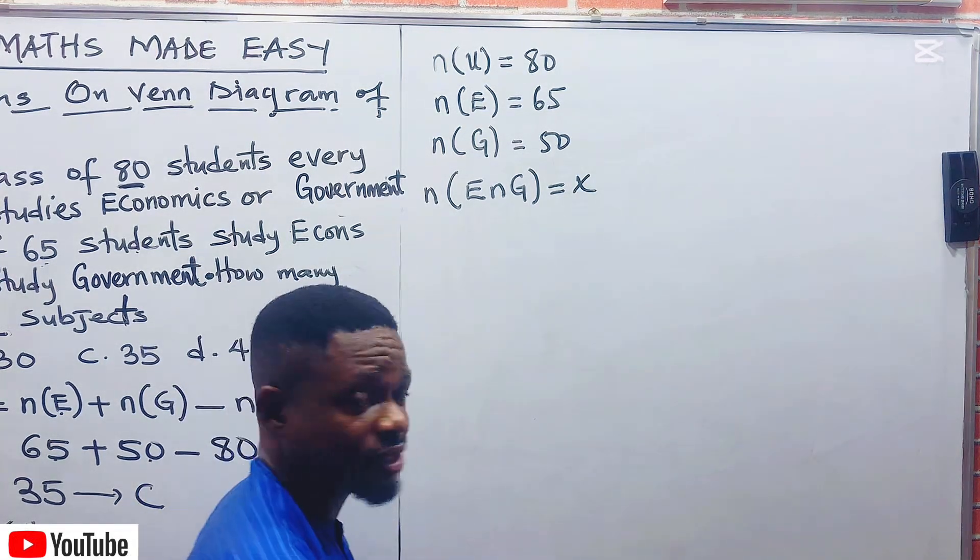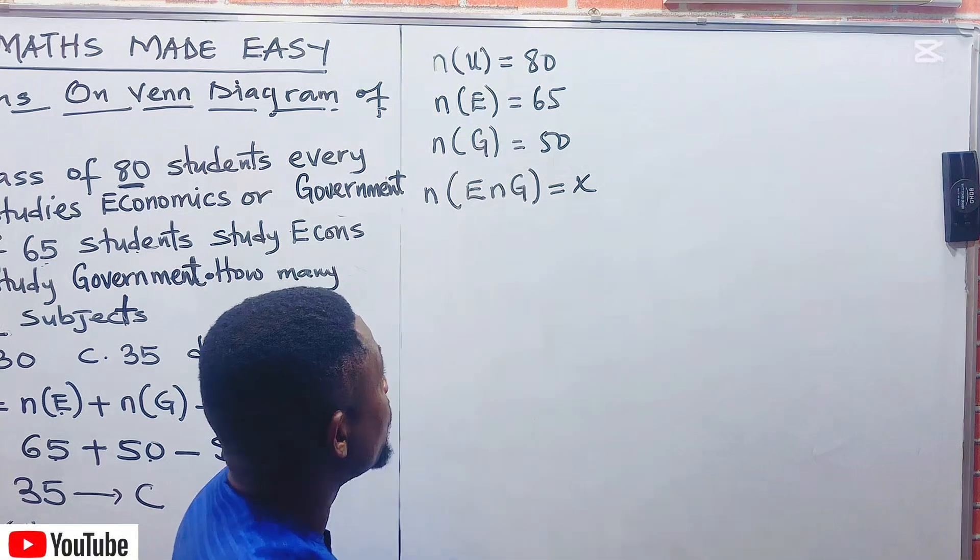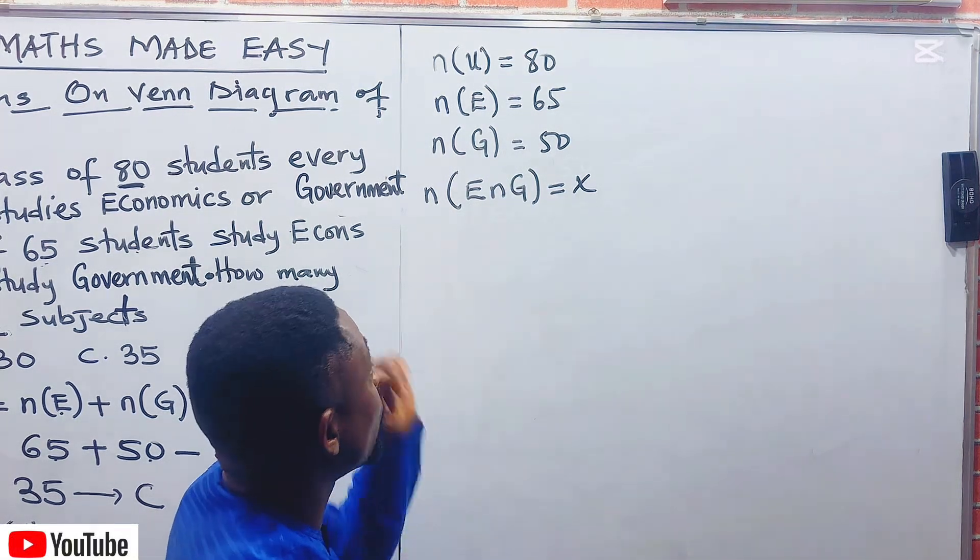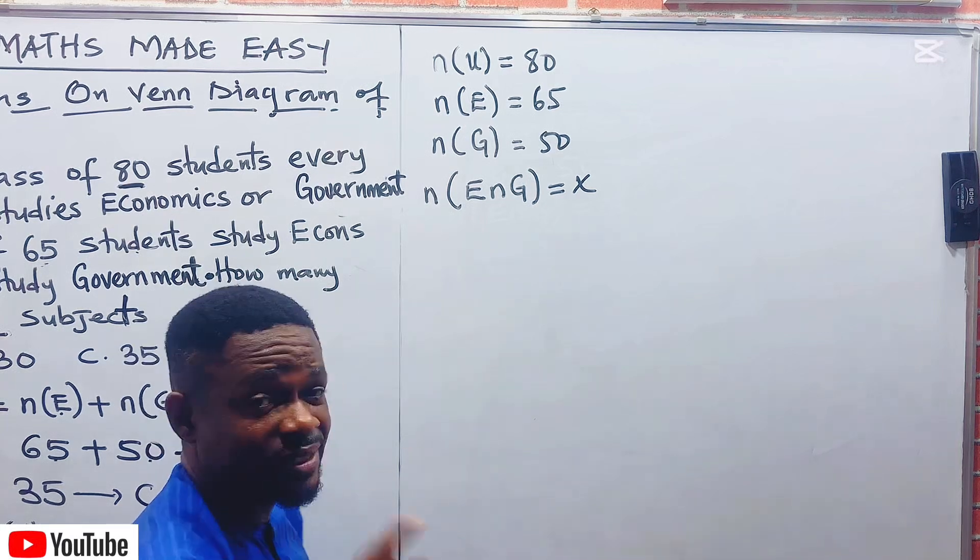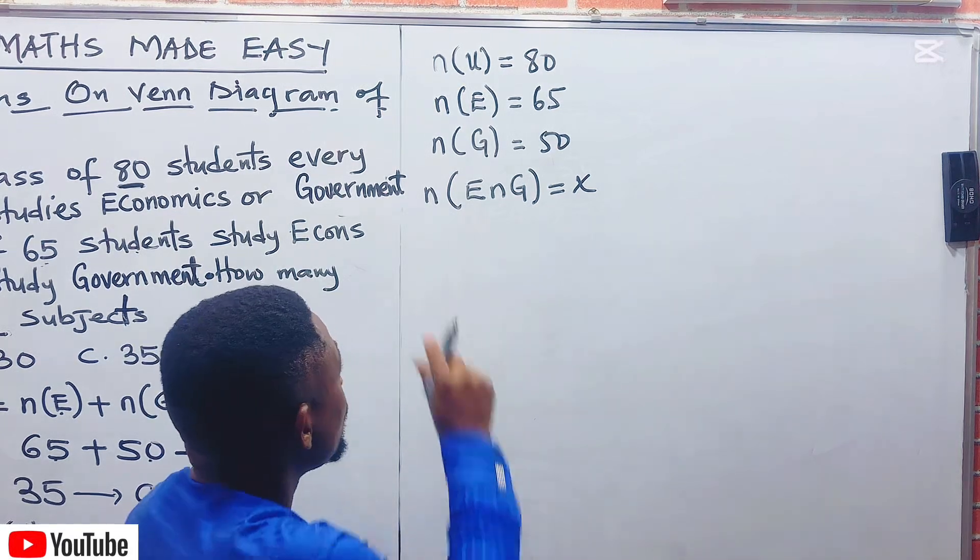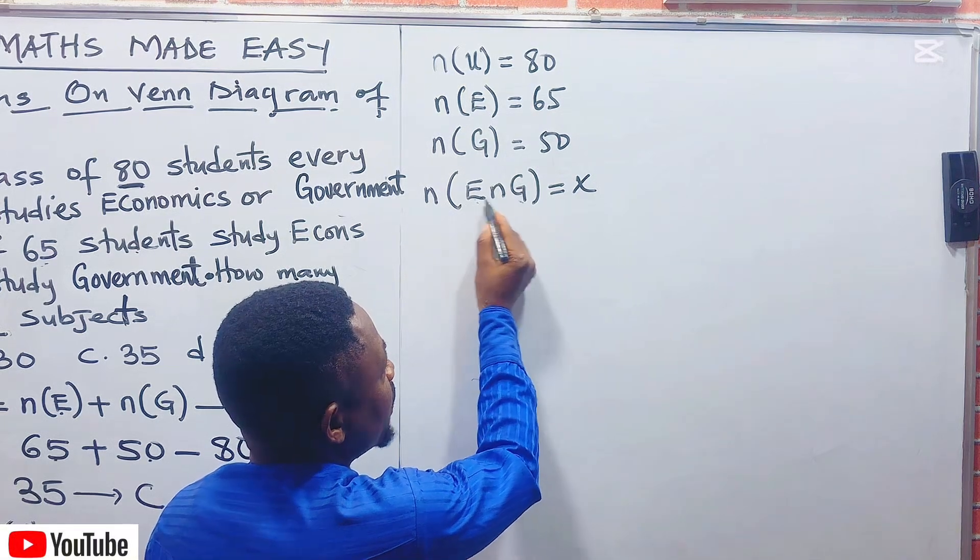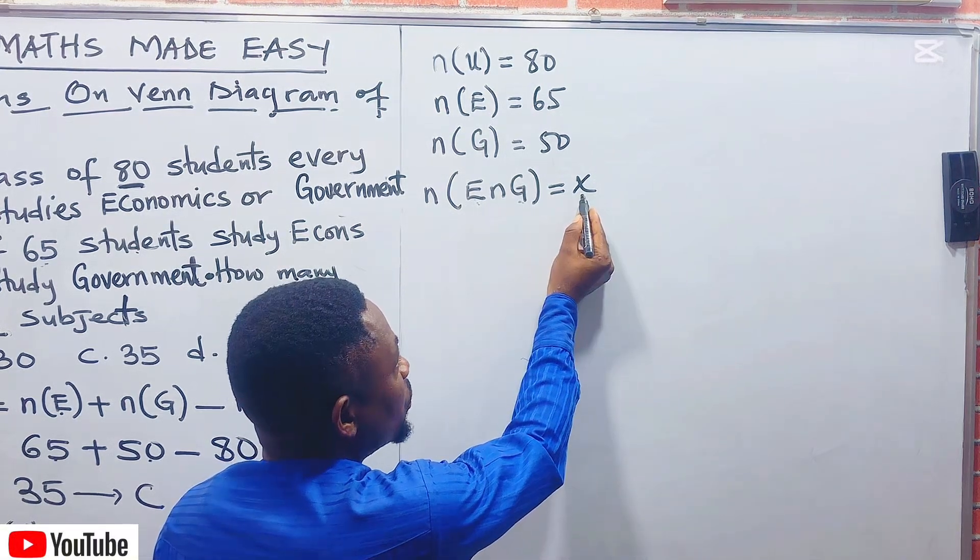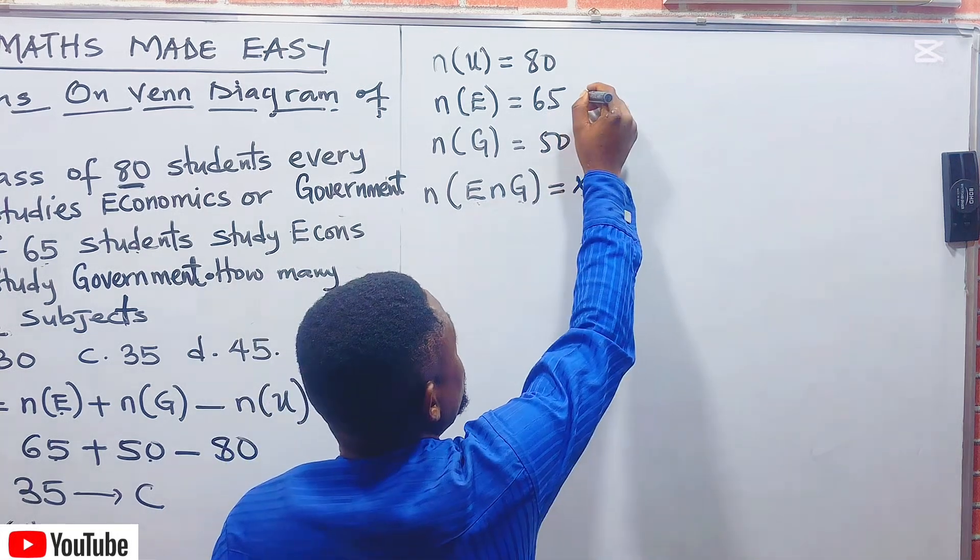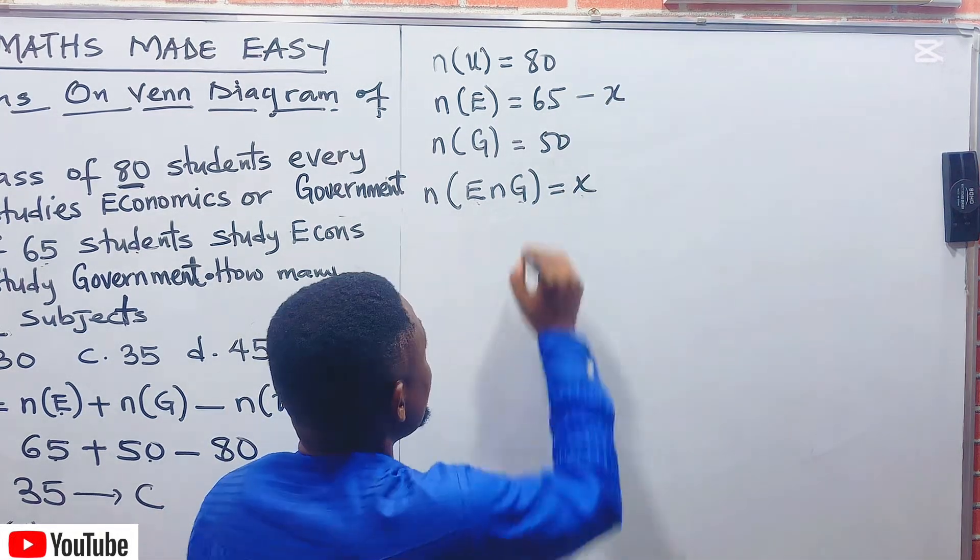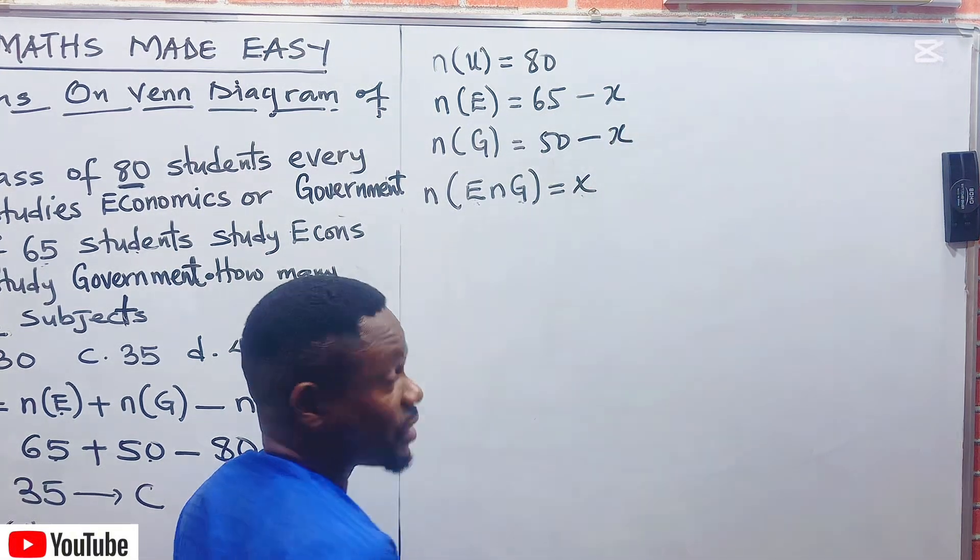You should observe this. This 65 in Economics and 50 in Government is not the exact number that offered it. It's just an assumed number. How do we get the exact number? Look at the secret. Go to the value of the intersection of the two sets, and it is given as X. Now, in each of the sets, go there, introduce minus X to Economics. Introduce minus X to Government.